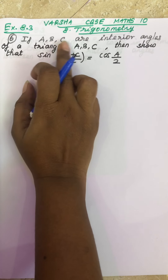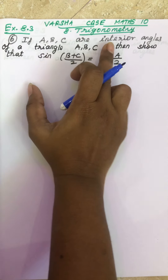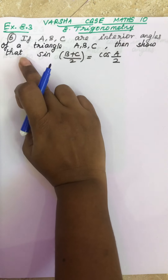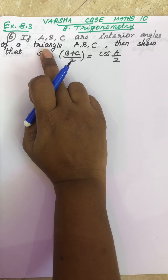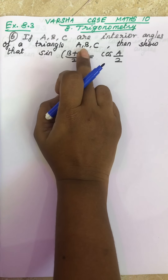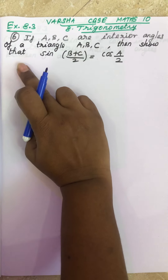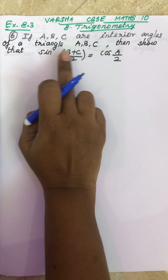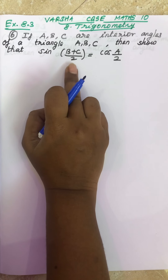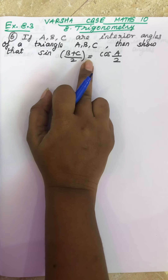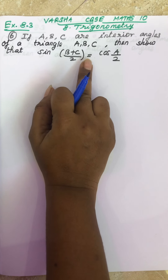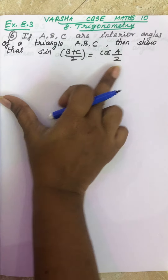If A, B, C are interior angles of a triangle ABC, then show that sin((B+C)/2) is equal to cos(A/2).